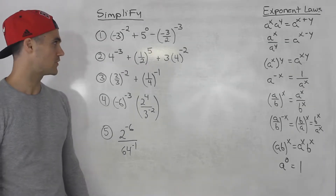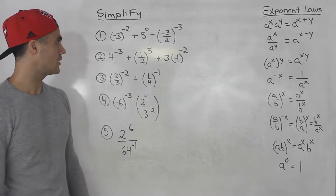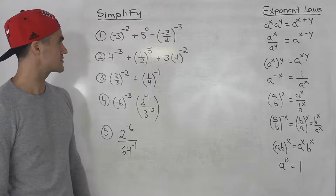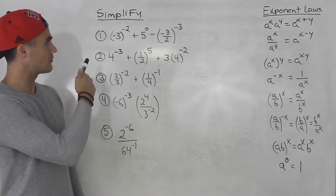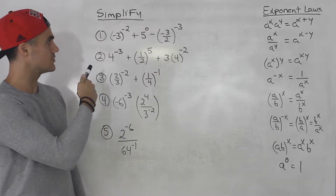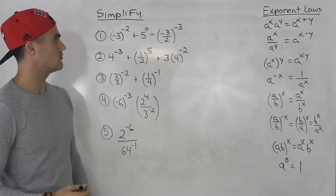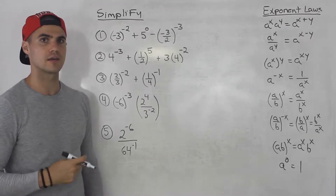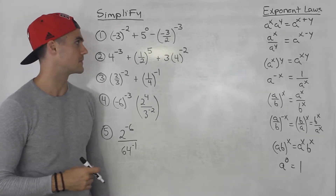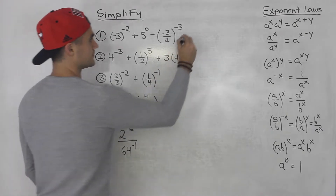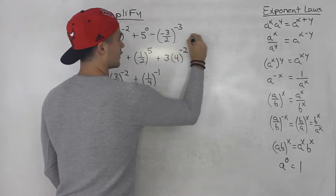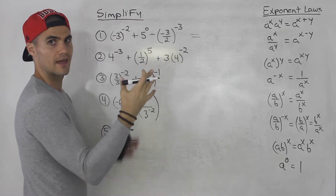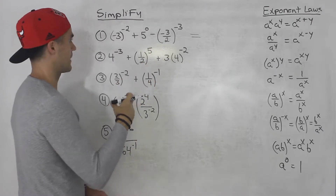What's up everyone? Patrick here. Moving on to a couple more exponential expressions to simplify. Starting with number one, we got negative three to the power of negative two, plus five to the power of zero, minus negative three over two to the power of negative three. Here you just want to work with each of these individually and then simplify them after.